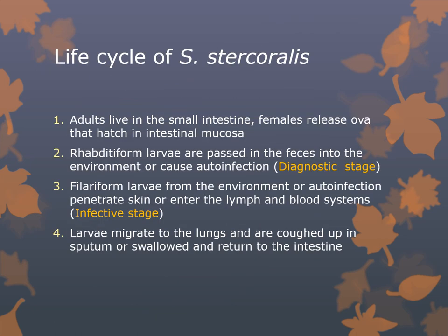In the life cycle of Strongyloides: adults live in the small intestine and females release ova that hatch in the intestinal mucosa. The female is capable of unisexual reproduction — no fertilization required. Rhabditiform larvae are passed in feces into the environment or cause auto-reinfection — this is the diagnostic stage, finding rhabditiform larvae in feces. Filariform larvae from the environment, or from auto-infection, penetrate the skin and enter the lymph and blood systems — that's the infective stage. Larvae migrate to the lungs, are coughed up or swallowed, and return to the intestine. Symptoms include peptic ulcers, diarrhea, and cough.